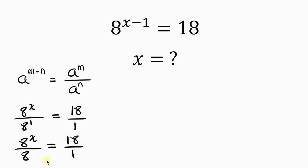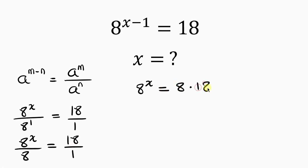Our next step will be to cross multiply. So 8 to the x times 1 gives us 8 to the x, and this is equal to 8 times 18.